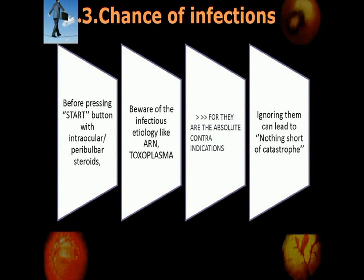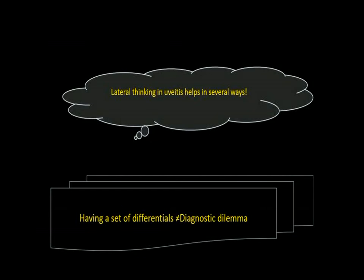In uveitis treatment, before pressing the start button with intraocular or periocular steroids, beware of infectious etiology — like ARN and toxoplasmosis — for they are absolute contraindications of the procedures, and ignoring them can lead to nothing short of catastrophe.